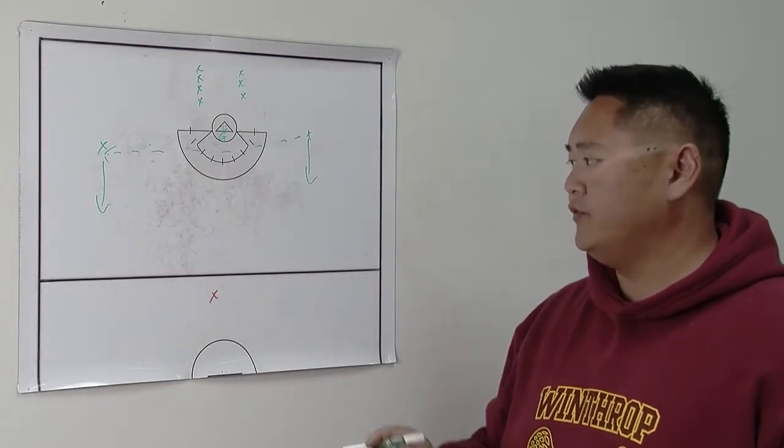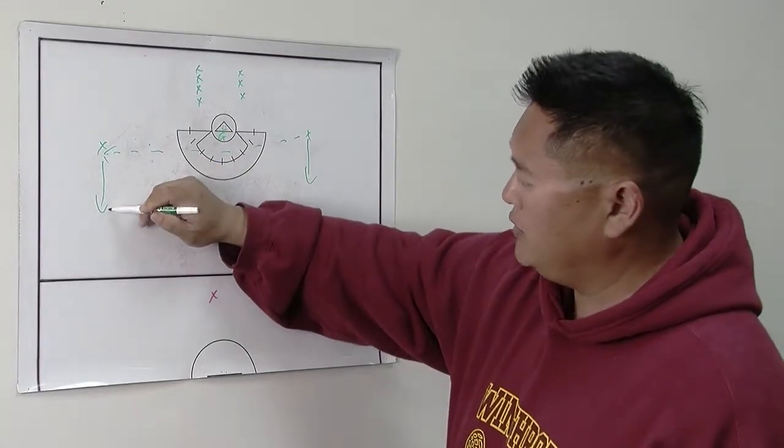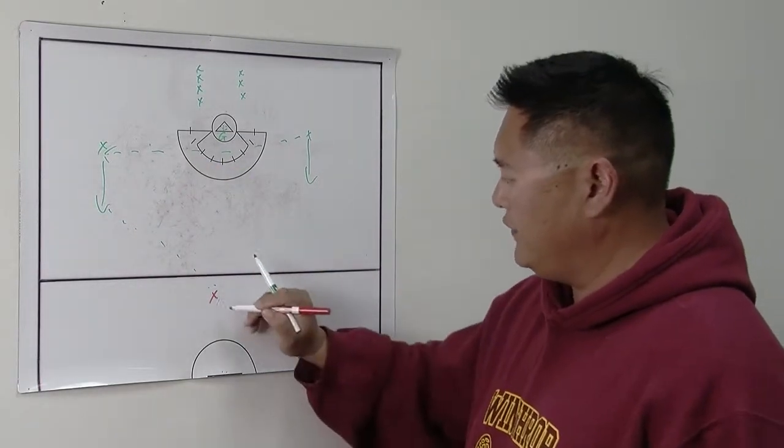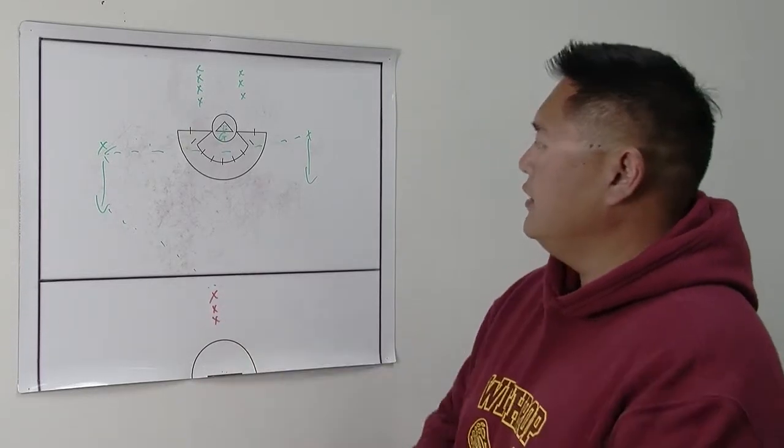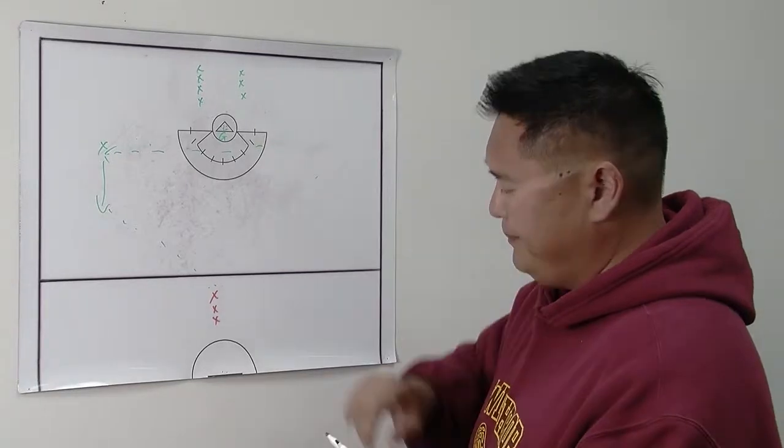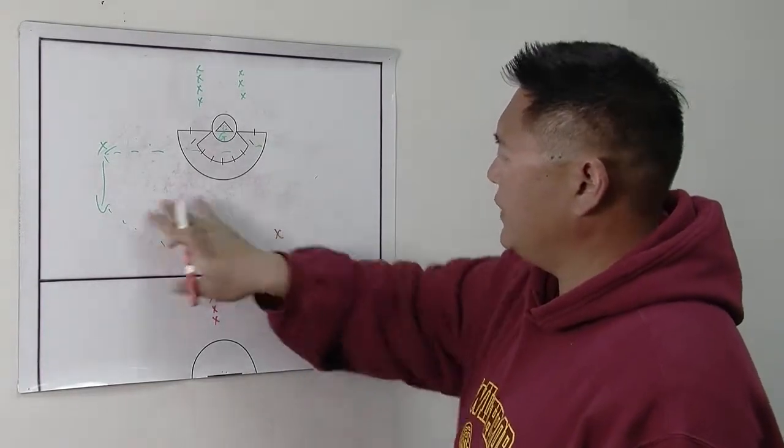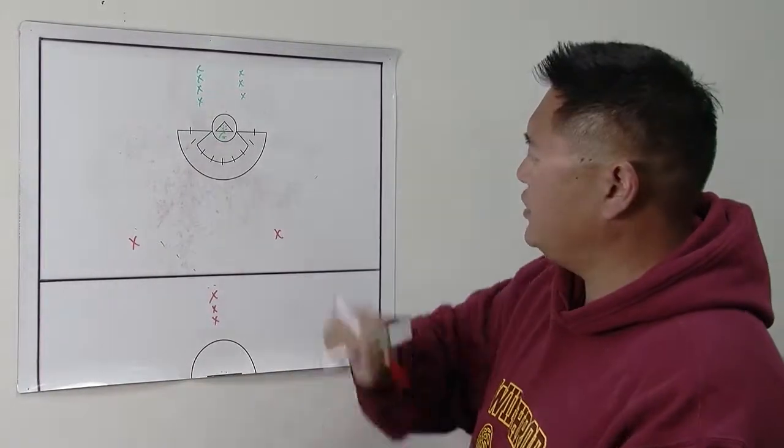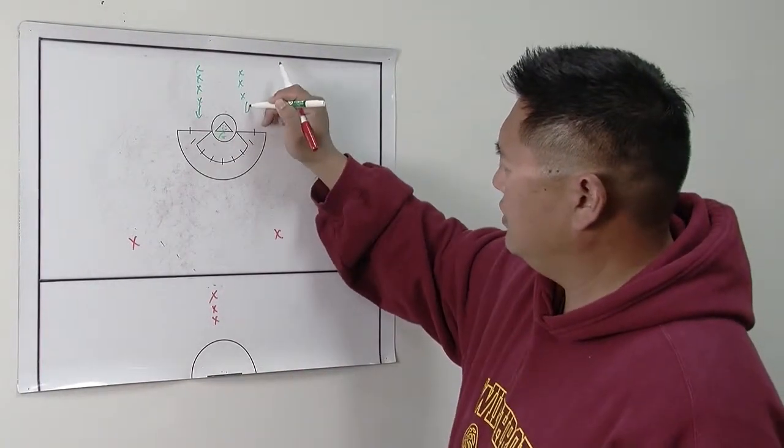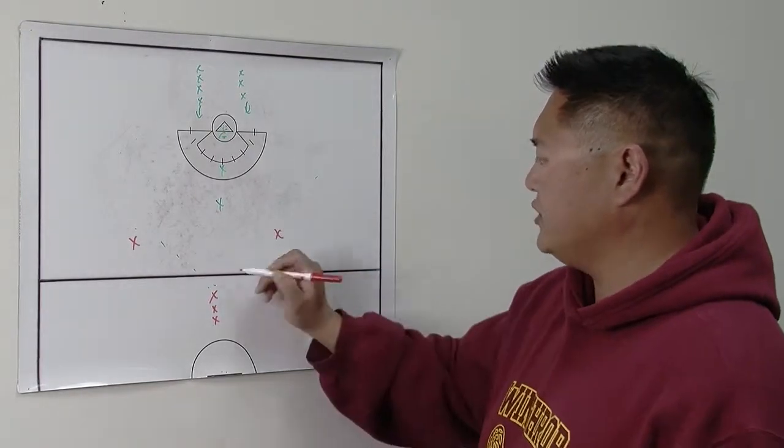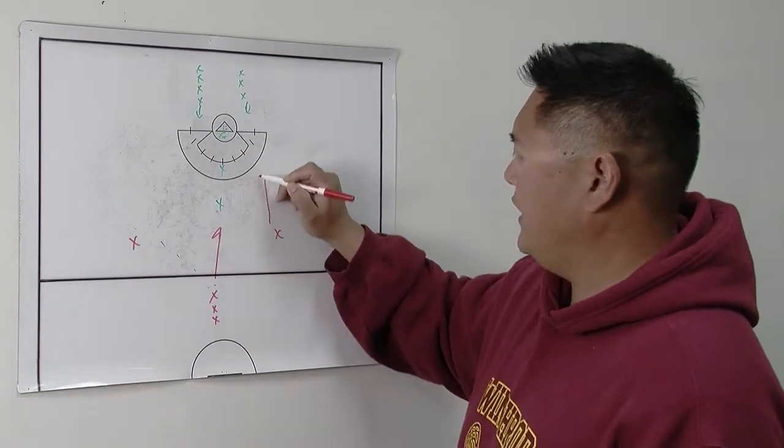Once they get that successful pass across field, this player now is going to make a pass to the top person. There's going to be a top line of attackers that are waiting. These people who came down on the initial clear will now become attackers, and the next two defenders will come out to defend the 3v2. So now these three attackers are attacking goal cage in the 3v2.